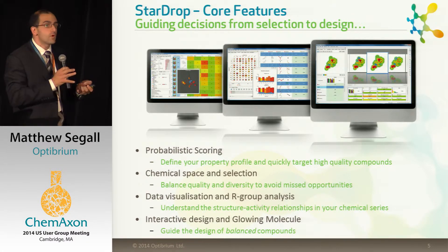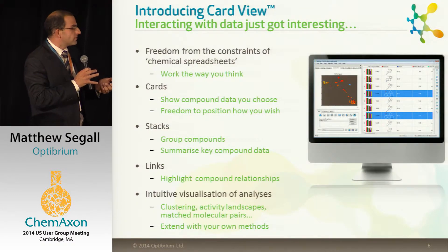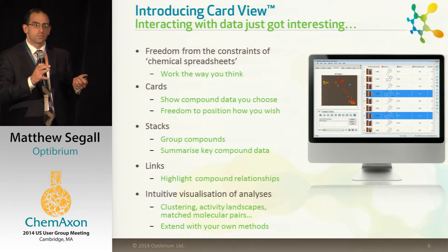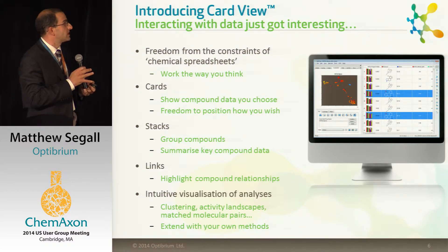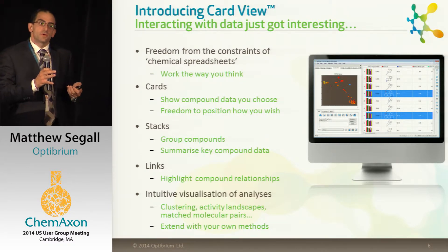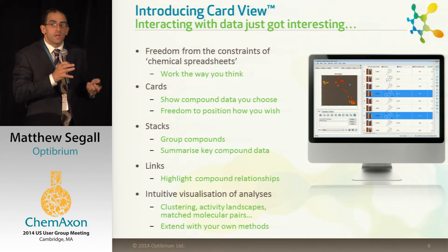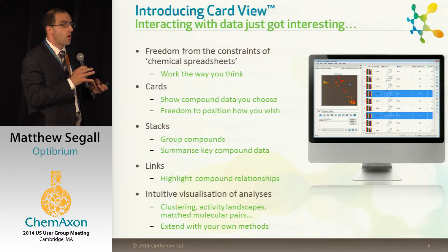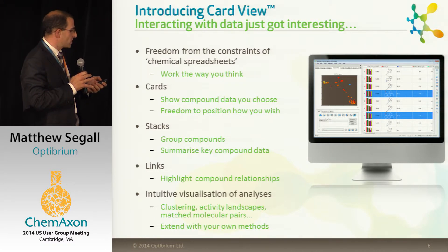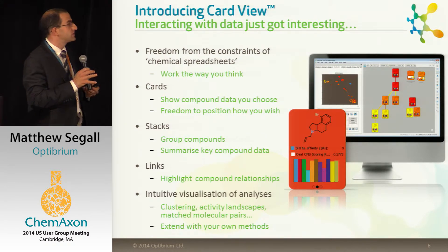I'd like to give you a preview of what's coming next, because something we're just about to release in the next few weeks is a new idea about how you can work with data in the context of a drug discovery project. Applications like StarDrop, and many other applications, work with chemical spreadsheets or form views to summarize data. The challenge is that gives you just a long list of compounds. We don't really think about compounds in terms of lists — we think about the relationships between those compounds and how they're organized within the context of our project. So what we're introducing is the idea of a card view that allows you to work the way that you think, to organize your data the way that you want to.